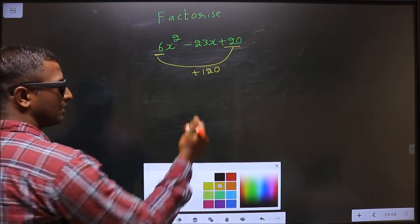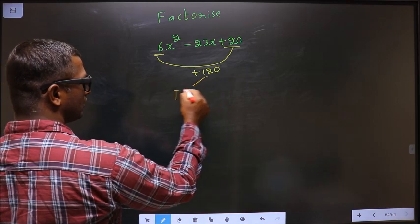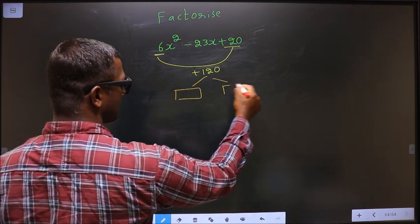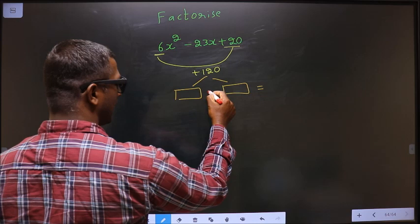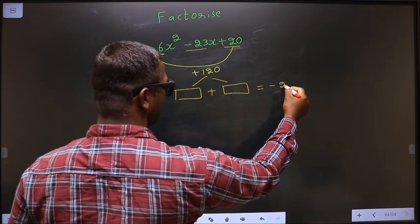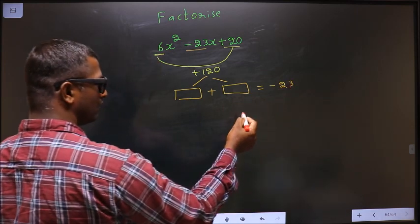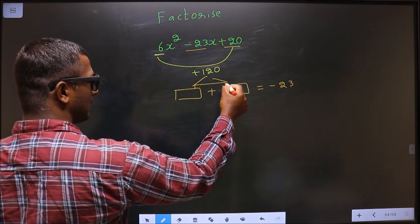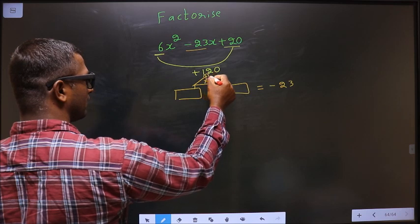Next. Now you should look out for two numbers such that when you add the two numbers, you should get the x coefficient that is minus 23. And also, when you multiply the two numbers, you should get 120.